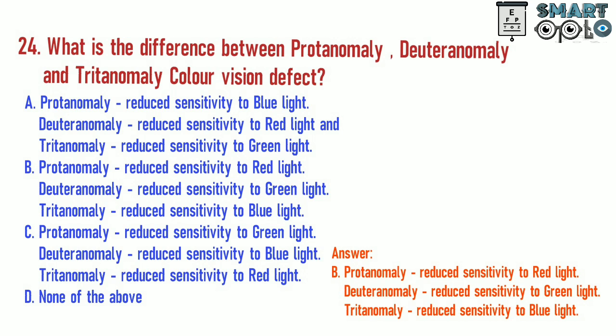Protanomaly is reduced sensitivity to red light. Deuteranomaly is reduced sensitivity to green light. Tritanomaly is reduced sensitivity to blue light.